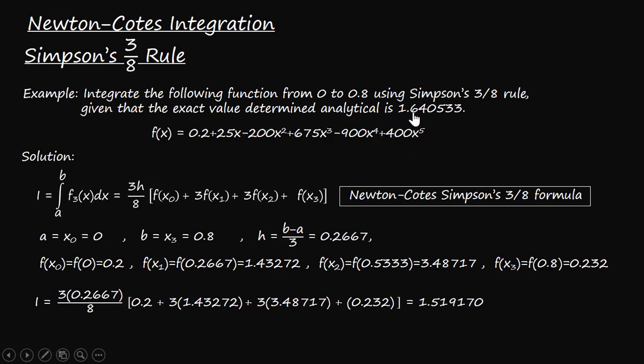Now we can see that the exact value is 1.640533, so the corresponding error is computed as 0.121363, whose corresponding relative percentage error is 7.4 percent. So this is how Simpson's three-eighth rule numerical integration works to find the approximate integral of the given functions.